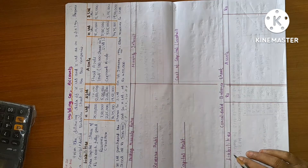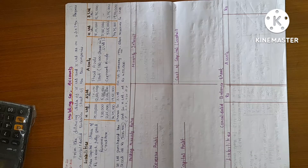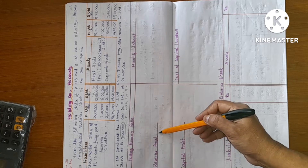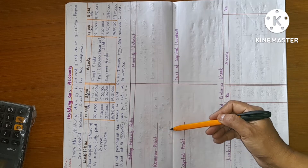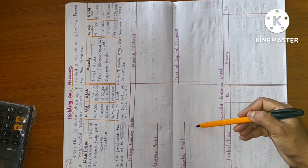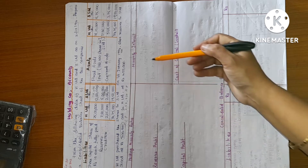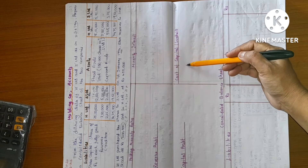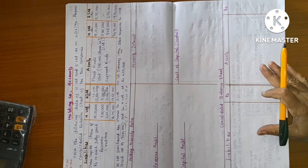This is the holding company and minority ratio. Let's go through the steps: first, holding-minority ratio; then revenue profit — holding company and minority holders; then capital profit — holding company and minority; then minority holders total; then holding company benefits; and finally, the consolidated balance sheet.